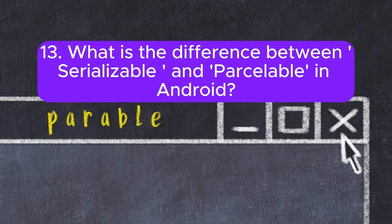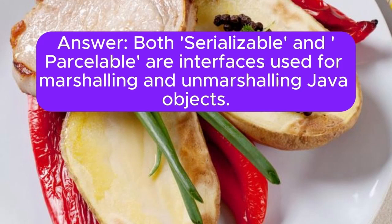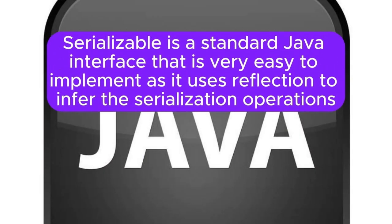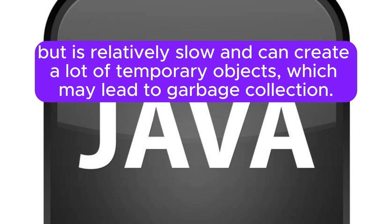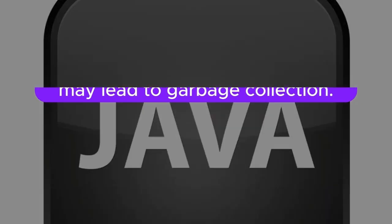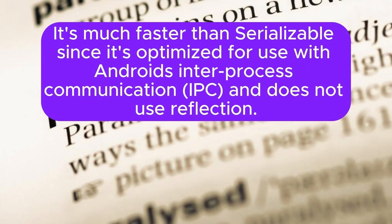Question 13: What is the difference between Serializable and Parcelable in Android? Both are interfaces used for marshalling and unmarshalling Java objects. Serializable is a standard Java interface that is easy to implement as it uses reflection, but is relatively slow and can create many temporary objects leading to garbage collection. Parcelable is an Android-specific interface that requires explicitly implementing serialization methods; it is much faster since it is optimized for Android's inter-process communication (IPC) and does not use reflection.